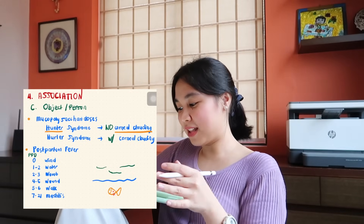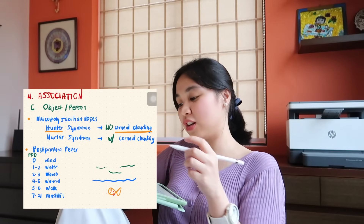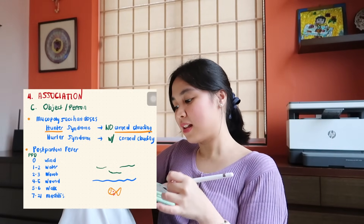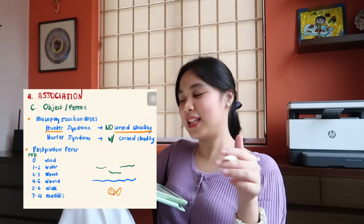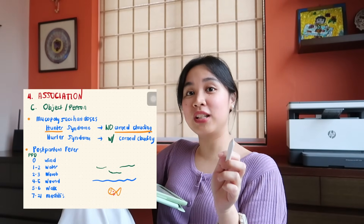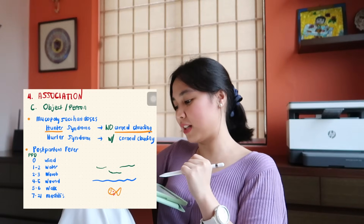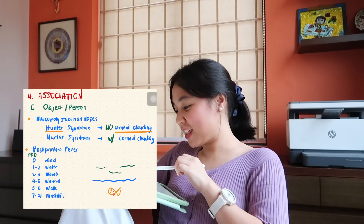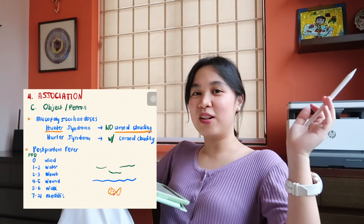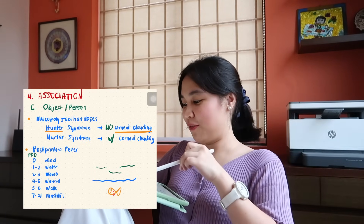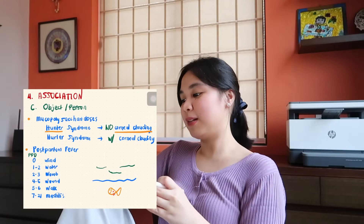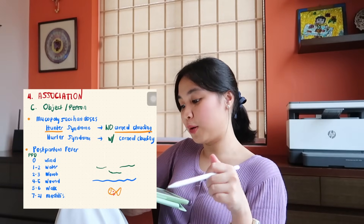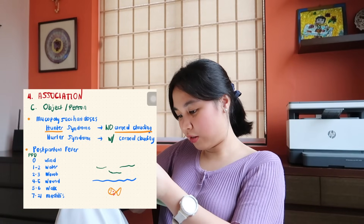Another association technique is linking information to objects or persons. For mucopolysaccharidoses, you have Hunter syndrome and Hurler syndrome, which have many similarities. The key difference: Hunter syndrome has no corneal clouding — because to hunt properly, you need clear vision. Hurler syndrome has corneal clouding.